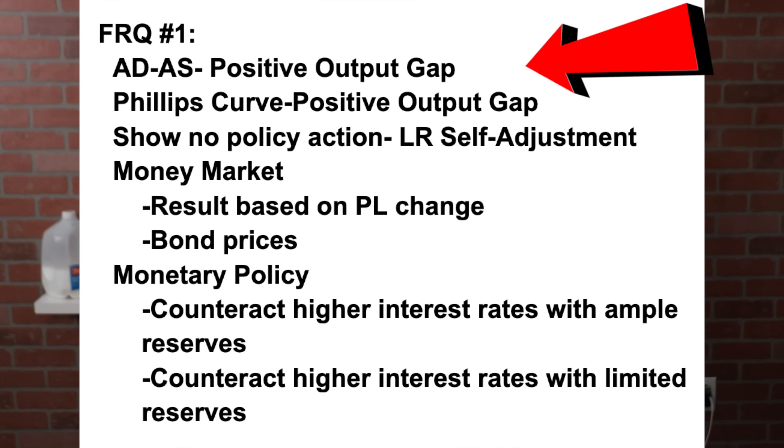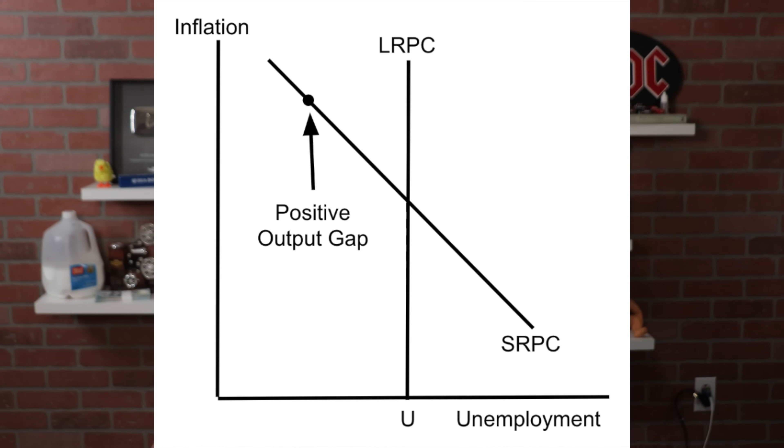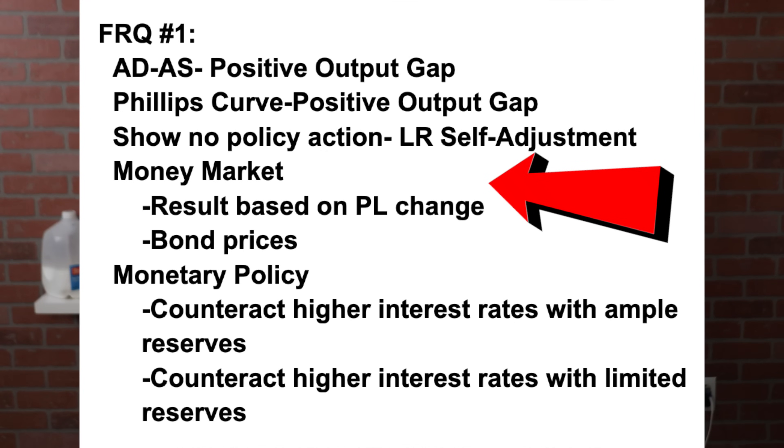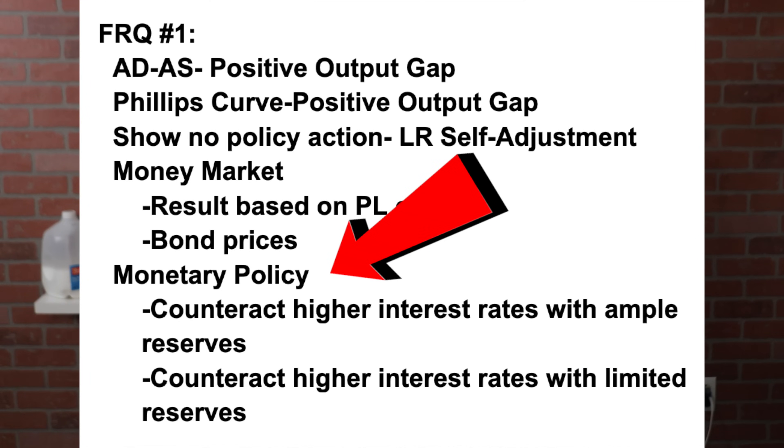There are three free responses for macro. I think the first free response is going to have you draw either aggregate demand and supply or the Phillips curve showing a positive output gap. They always ask aggregate demand and supply questions, but I think this year it might just be the Phillips curve. Make sure you can draw both and show what happens in the long run. From there, I think they're going to ask about the money market graph — showing supply and demand for money with some sort of shift, like an increase in demand due to higher inflation. After that, they'll ask about monetary policy: what can the central bank do to mitigate higher interest rates from the increase in demand for money? So make sure you understand monetary policy and the three graphs: aggregate demand and supply, the Phillips curve, and the money market.